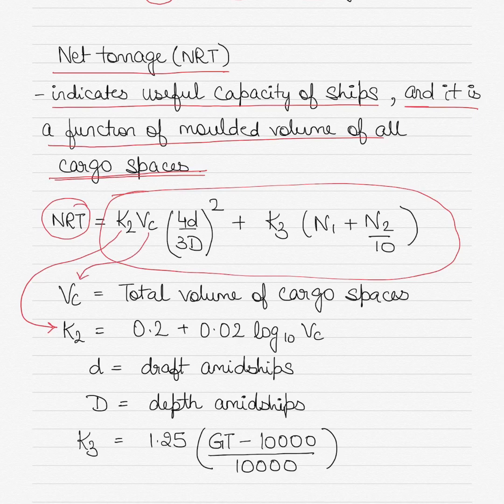Vc stands for the total volume of all cargo spaces. The small d here stands for the draft in the midship section of the vessel, and the big D stands for the depth of the vessel midships.